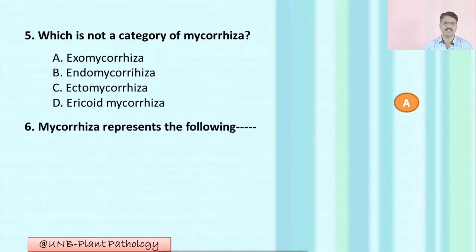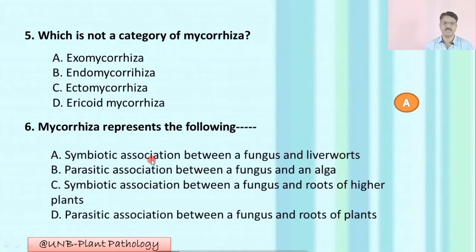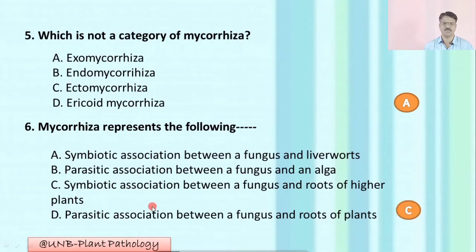Question number six: Mycorrhizae represents — A: symbiotic association between fungus and liverworts; B: parasitic association between fungus and alga; C: symbiotic association between a fungus and roots of higher plants; D: parasitic association between a fungus and roots of plants. The correct option is C: symbiotic association between a fungus and roots of higher plants.